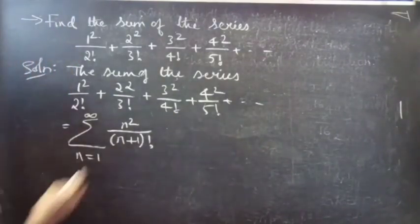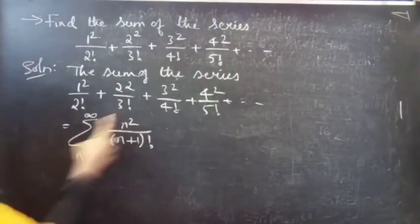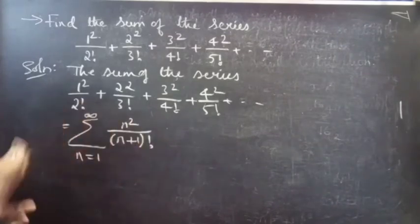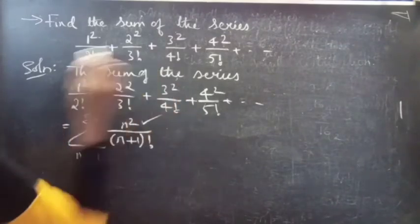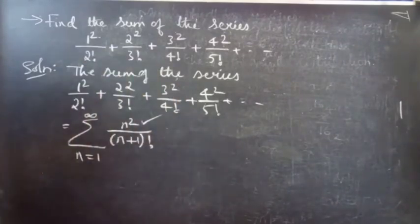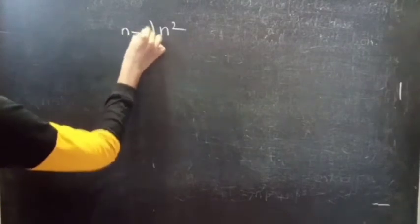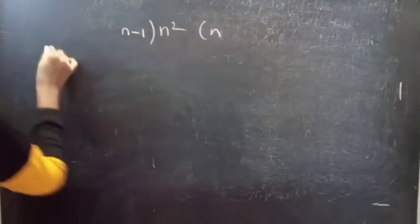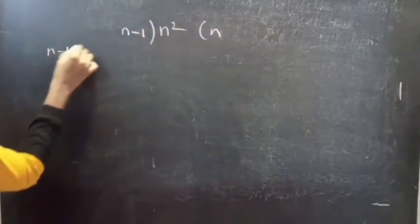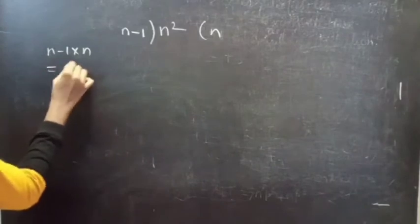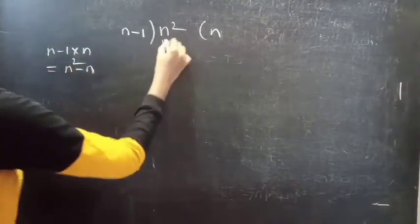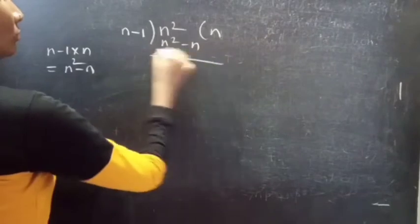Now we have n squared in the numerator and (n+1) factorial in the denominator. We need to rewrite n squared in terms of (n+1). Note that n times (n-1) gives n squared minus n.